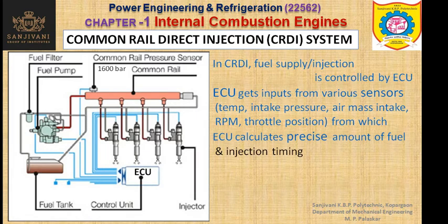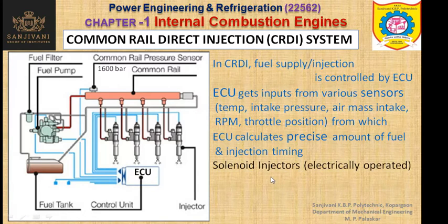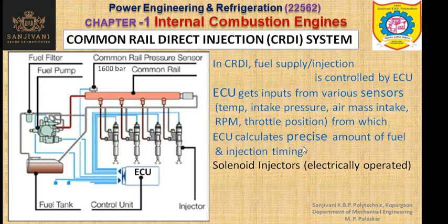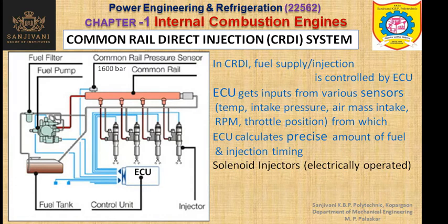The ECU calculates the precise amount of fuel, the injection timing, the precise quantity of fuel, the rate of fuel supply, and the exact duration. All these things are calculated by the ECU, and accordingly the fuel is injected inside the engine cylinder. For this purpose, solenoid injectors — that is, electrically operated injectors — are used. The electrical signal is obtained from the electronic control unit.